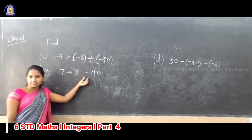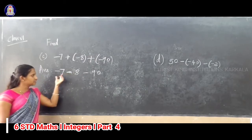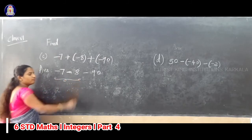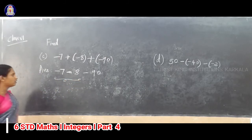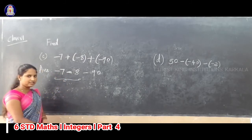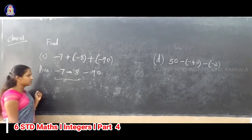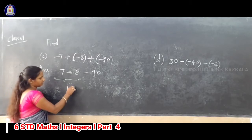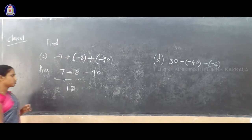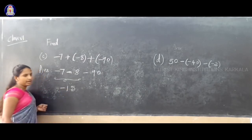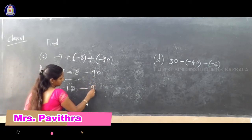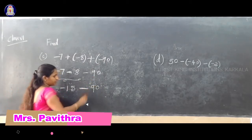Here there are three integers. So first, consider the first two integers: minus 7 and minus 8. If you solve this, the sign is minus minus — same sign means addition. So 7 plus 8, that is 15. The greater number is 8, that sign is minus. So the answer is minus 15. The next remaining integer is minus 19.